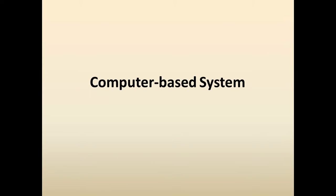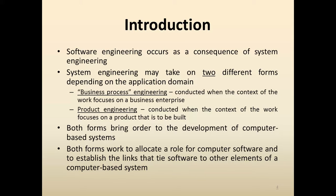In Software Engineering, as you all know, we are applying some type of techniques or methods on the software while you are developing a software or application. Software Engineering occurs as a consequence of System Engineering. This System Engineering may take on two different forms depending on the application domain — Business Process Engineering and Product Engineering.